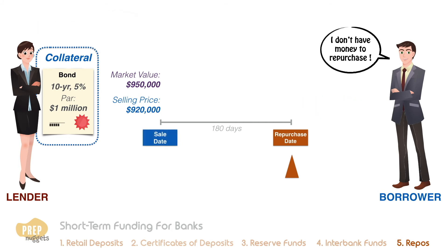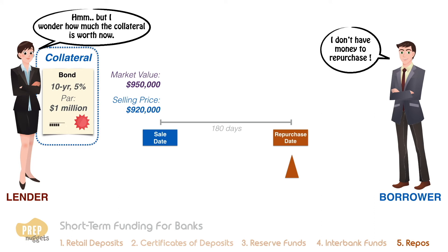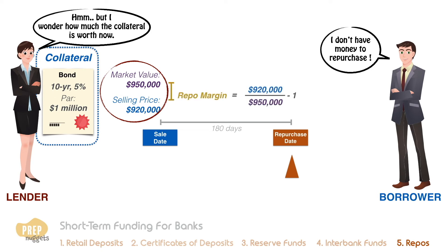The risk, however, is that the price of the collateral may have fallen following the inception of the repurchase agreement, causing the market value of the collateral to be lower than the unpaid repurchase price. This is the reason why there's a gap between the market value of the collateral and the selling price. This gap is known as the repo margin or haircut, which in this case is 3.16%. The repo margin provides the lender a margin of safety if the collateral's market value declines.